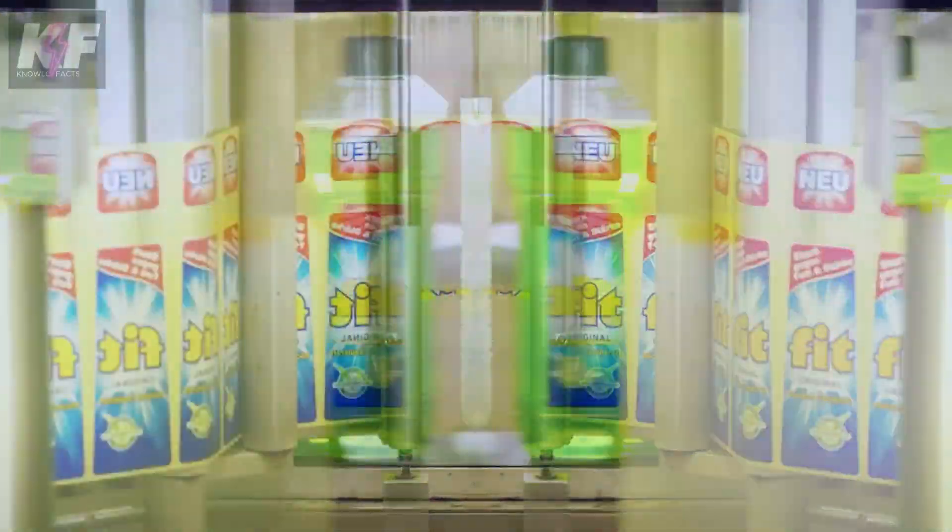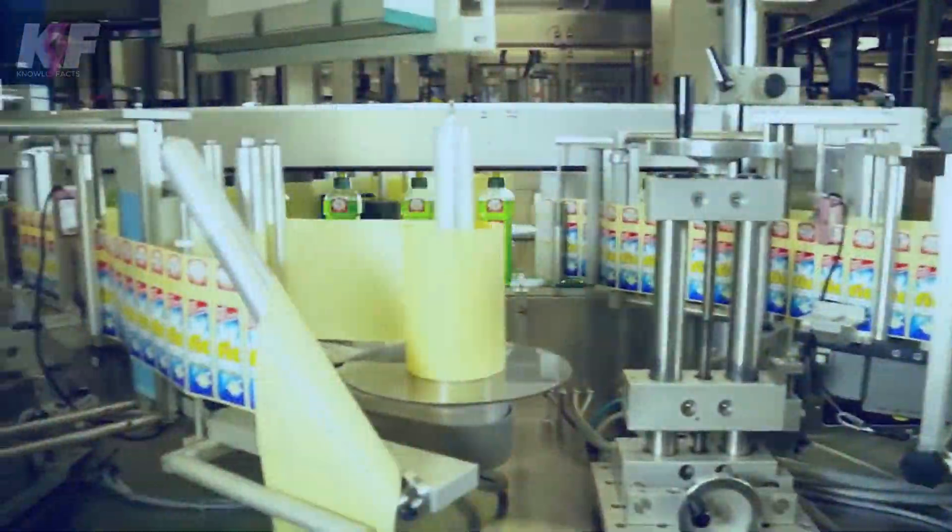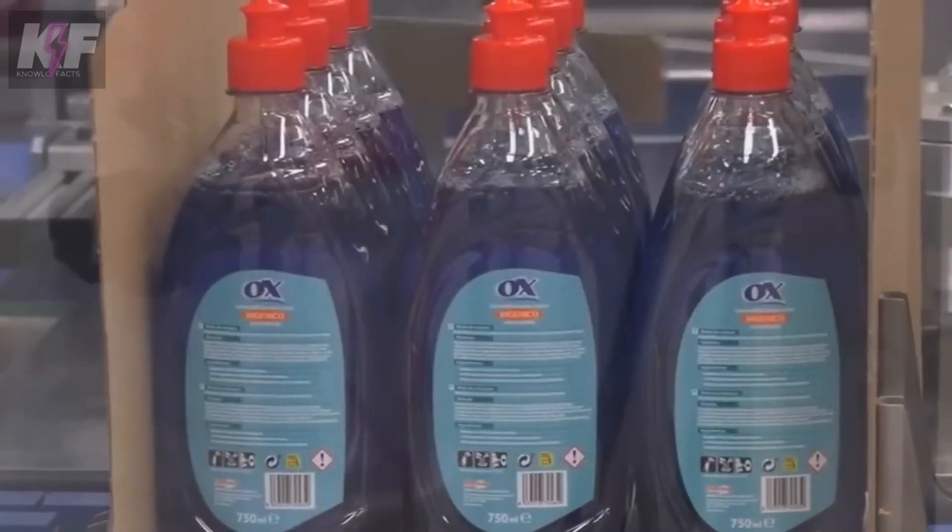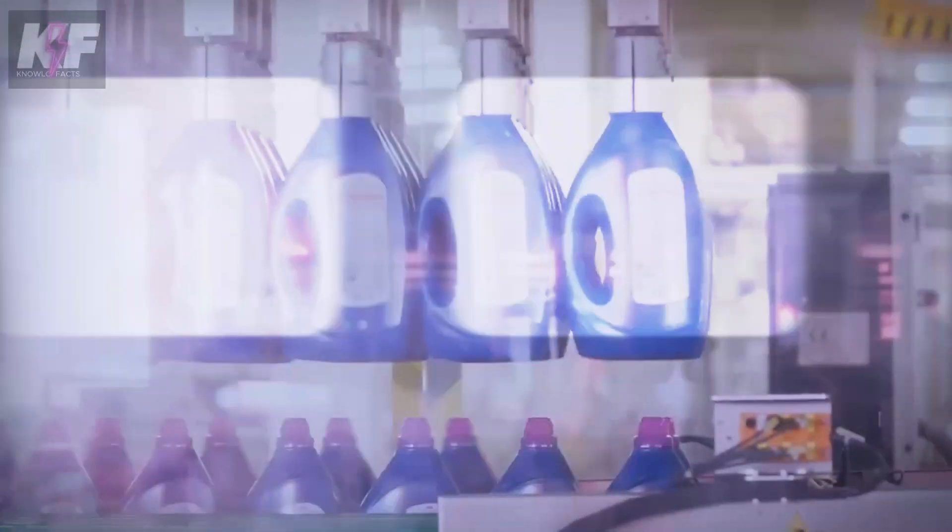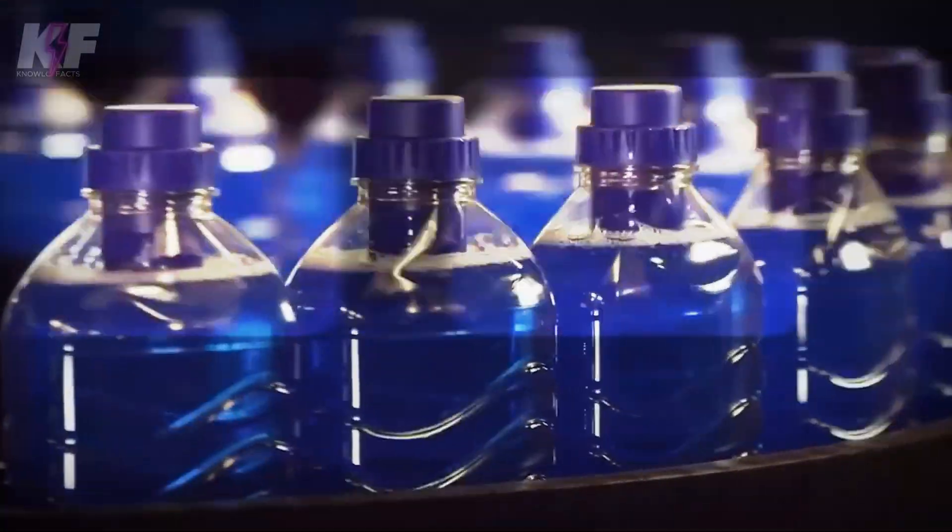Then, the labels with important information such as usage instructions, warnings, and ingredients are placed. The labeled containers are placed in boxes for distribution. It is ensured that the containers are protected during transport and storage.